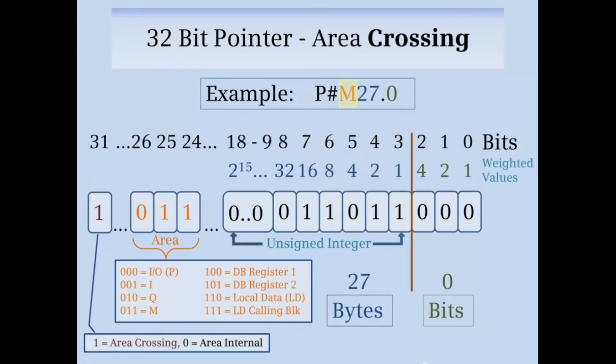The area part of the address is stored in bits 24, 25, and 26. If the bit pattern is 000, the area is peripheral input or output. If the bit pattern is 001, the area is input. If the bit pattern is 010, the area is output. 011 is bit memory, as in the example here.